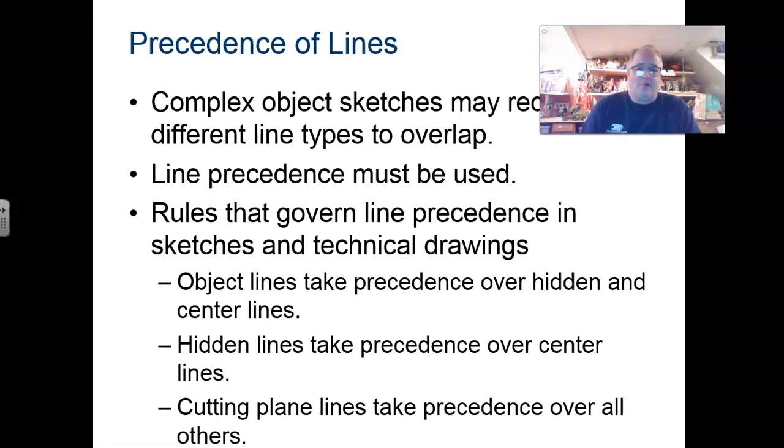There is what they call precedence of lines that we need to go over. This is when any type of line might overlap. Which line is going to be actually shown and which one should be drawn? The more complex we get with different types of prints, they are going to require this and you'll get more familiar with it as you go. The rules are, and this you want to try to commit to memory.